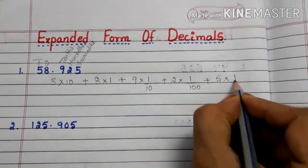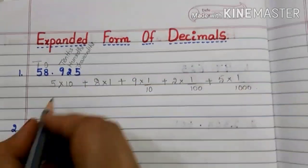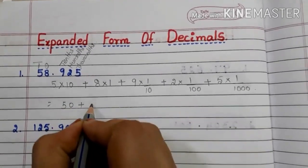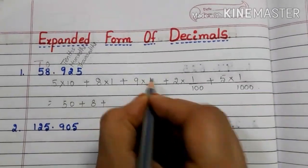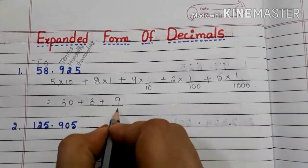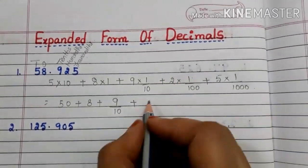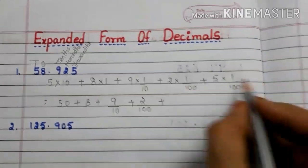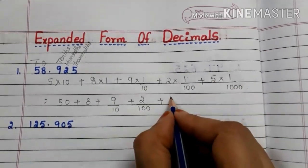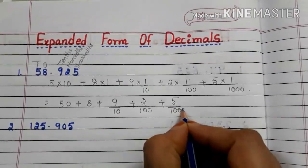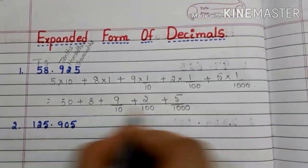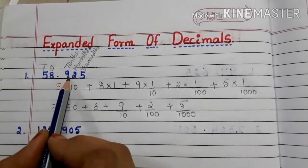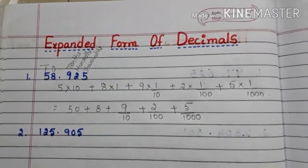So 5 tens are 50, plus 8, plus 9 into 1 by 10 is 9 by 10, plus 2 into 1 by 100 is 2 by 100, plus 5 into 1 by 1000 is 5 by 1000. So this is the expanded form of the decimal number 58.925.